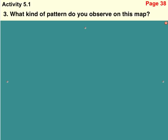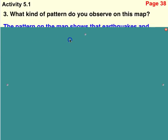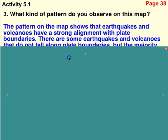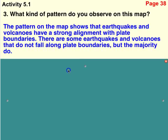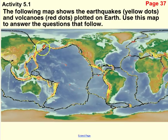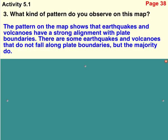All right, so you've had a chance to answer the question. Did you notice that on the map the earthquakes and volcanoes have a strong alignment with the plate boundaries? A lot of the earthquakes and volcanoes fall along these lines — not all of them, but a lot do. There's a really strong tendency that wherever you find a plate boundary, you find earthquakes and volcanoes. The majority of them do fall on those plate boundaries.